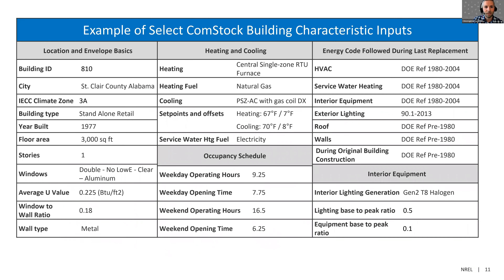This shows an example of some select Comstock building characteristic inputs for one Comstock model. To the left we see location and envelope basics. In the middle, we have heating and cooling and occupancy schedules. To the right, we have different energy code parameters followed for different systems in the building, which will drive baseline properties such as for HVAC — for example, the cooling efficiency of a unit or whether it has energy recovery.